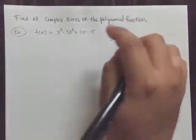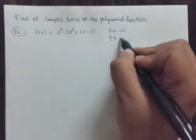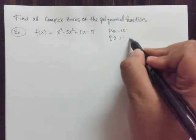So let's see here. p, in this case, happens to be this negative 15, and q happens to be 1. And that actually makes it very easy for us.